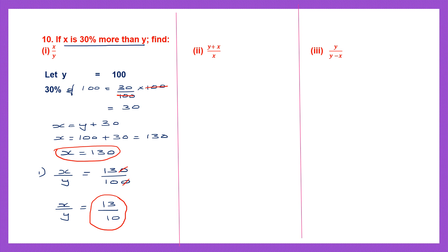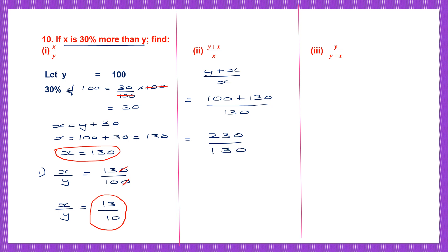The second question is (y plus x) divided by x. y is 100 and x is 130, so we have 100 plus 130 divided by 130. 100 plus 130 is 230 and the denominator is 130. Cancelling the zeros gives 23 by 13. So (y plus x) divided by x equals 23 by 13.